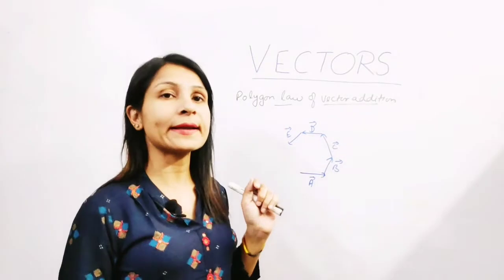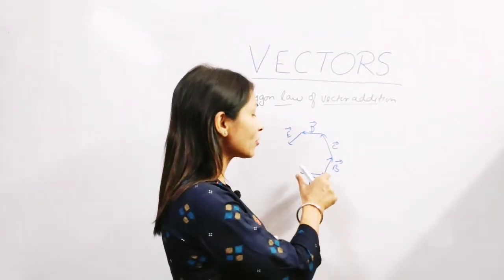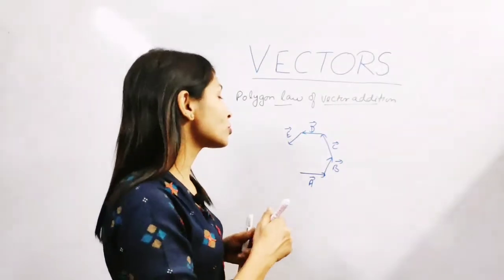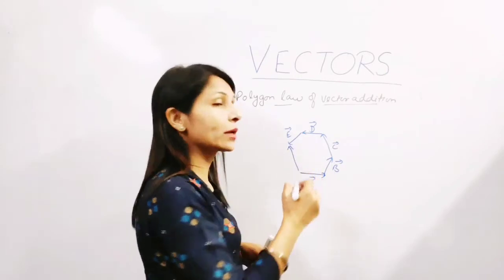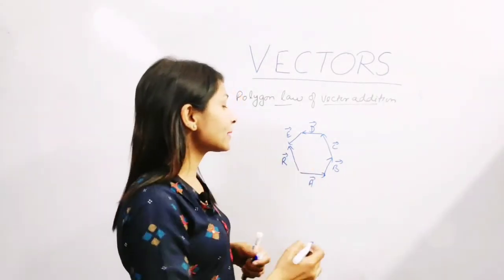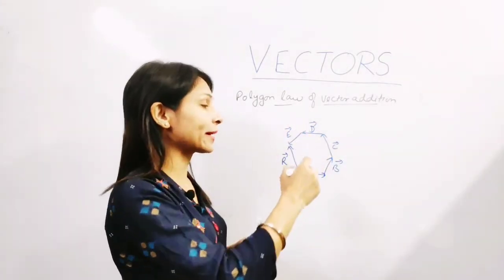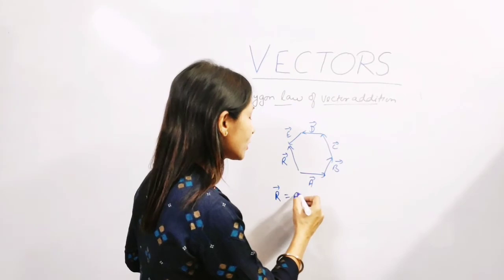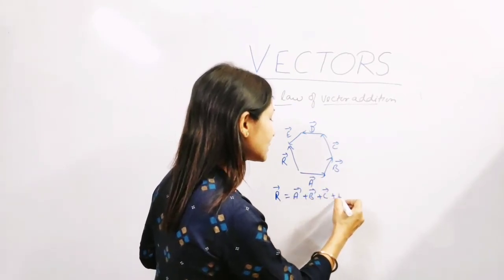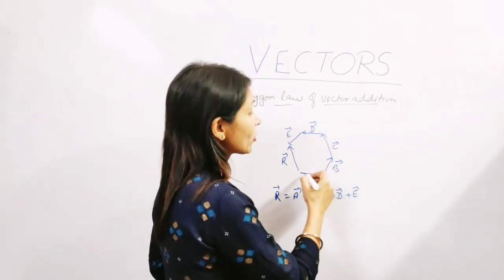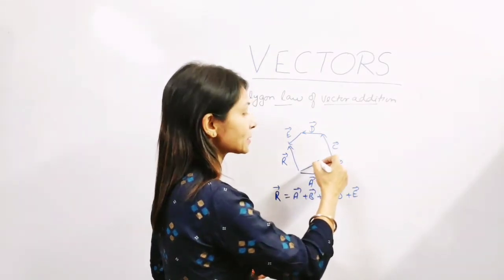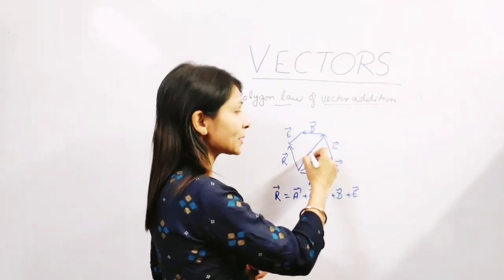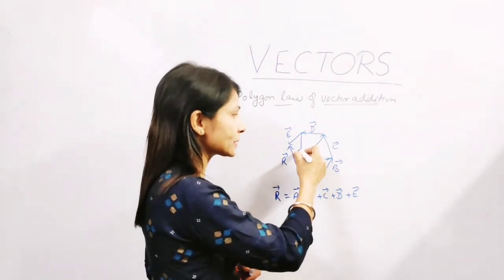Next is the polygon law of vector addition. It says that if there are a number of vectors acting on a particle represented by different sides of an open polygon, taken in the same order, their resultant is represented by the closing side taken in opposite order. So the addition of many vectors equals A plus B plus C plus D plus E. Vector A plus vector B gives A plus B; adding C gives A plus B plus C; adding D gives A plus B plus C plus D; and adding E gives the total resultant.